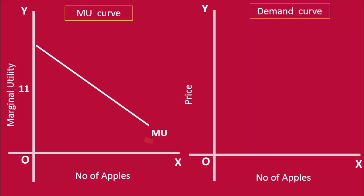To begin with, the price of apple is 11 rupees. The consumer equates his marginal utility with price at point E. He is in equilibrium. He buys 4 apples. At 11 rupees, the consumer buys 4 apples. This is a point on the demand curve, plotted on the graph as point B.